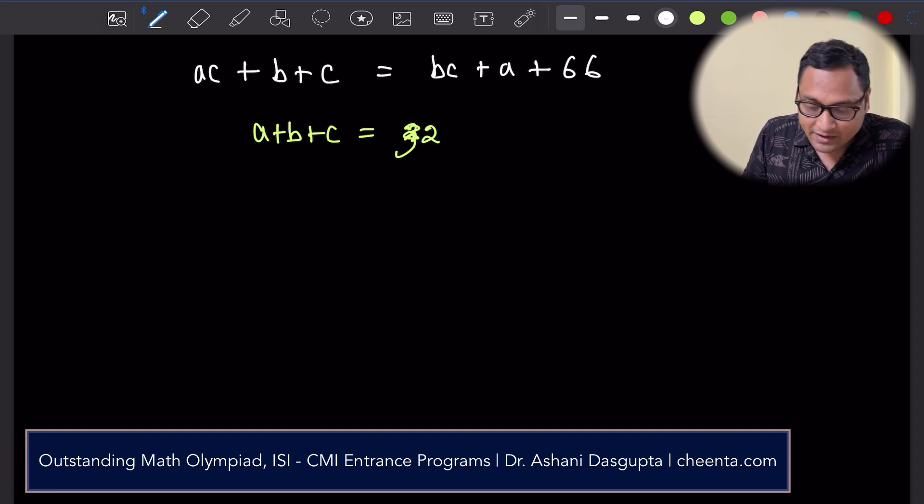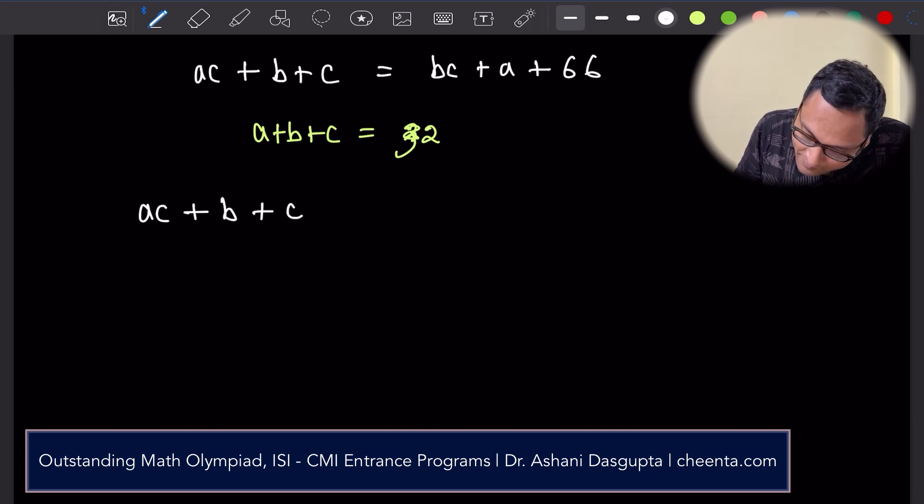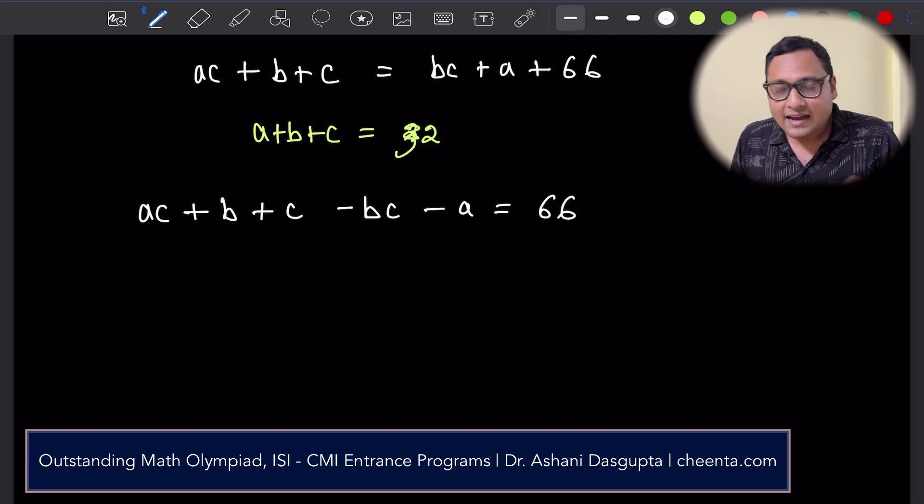First let's look at the first equation. We will do a very simple manipulation. We will bring everything to one side, so ac + b + c minus bc minus a is equal to 66. Here is the trick: I want to factorize the left-hand side.